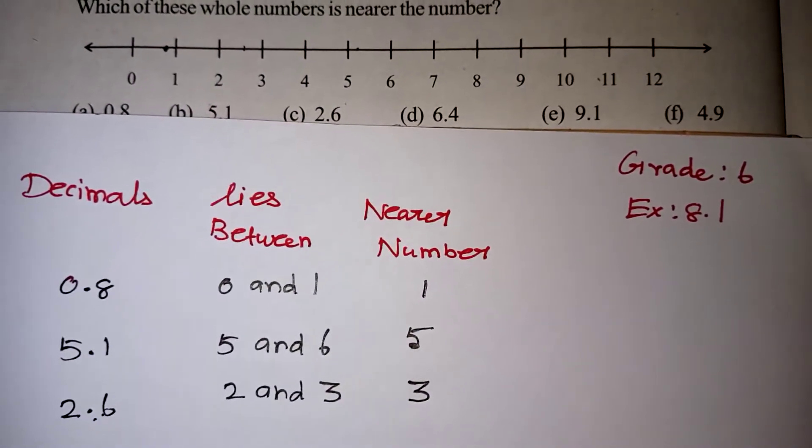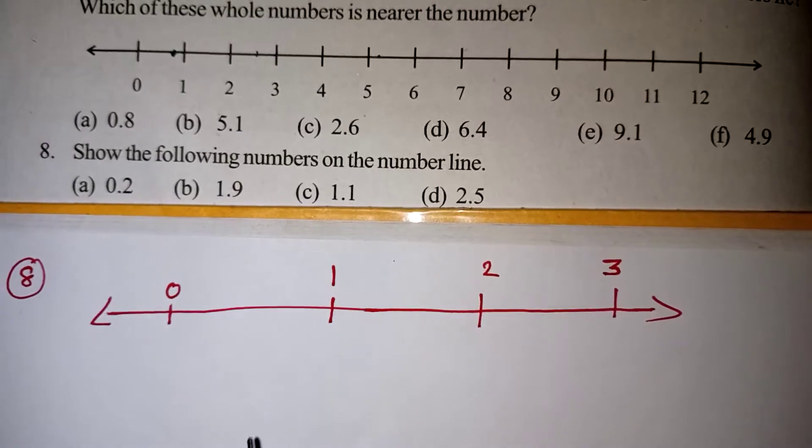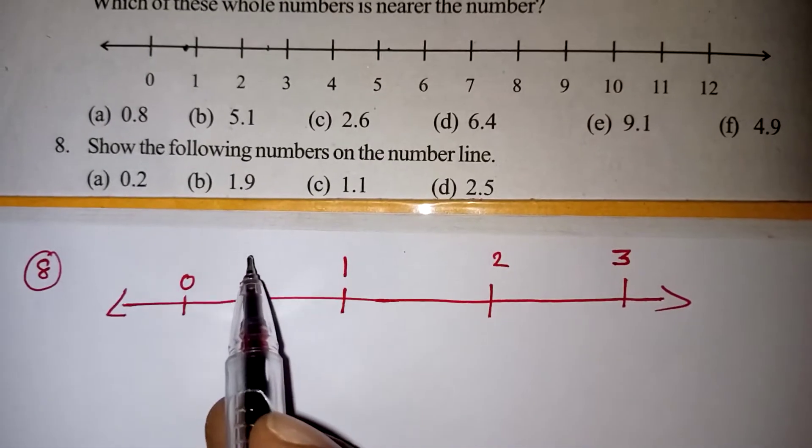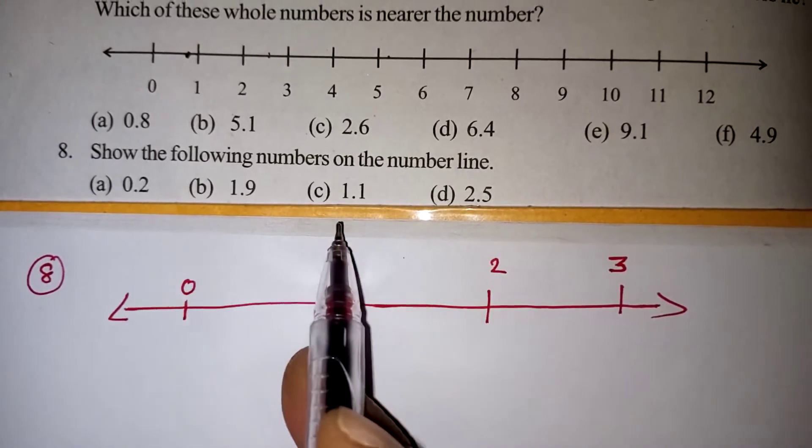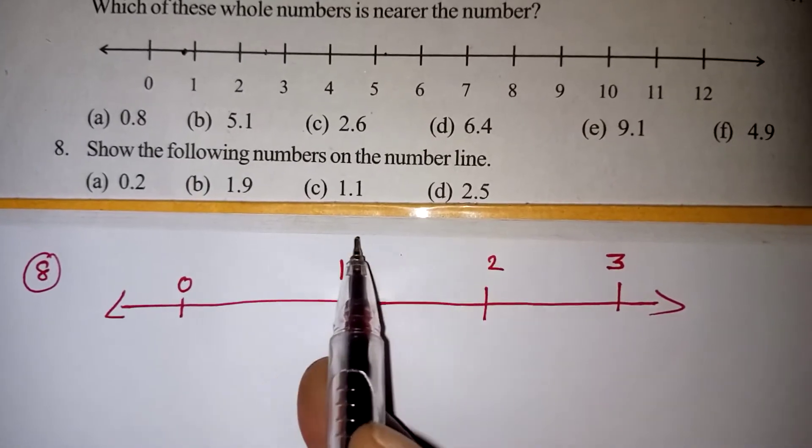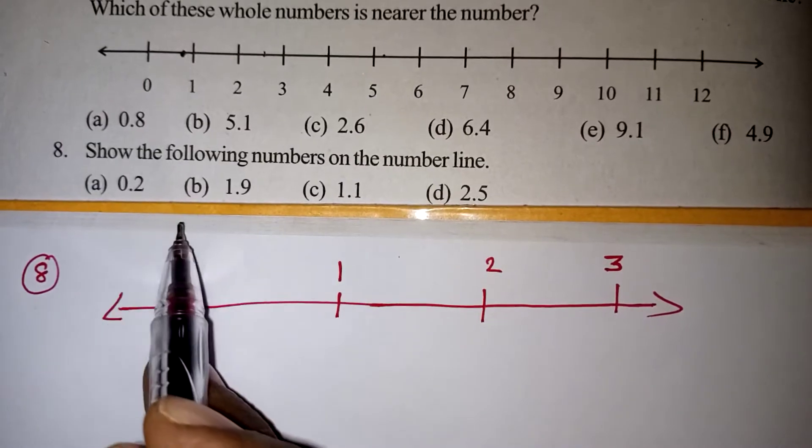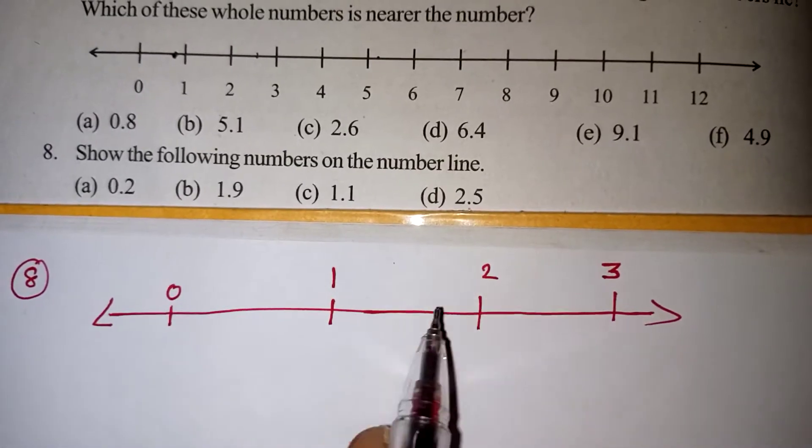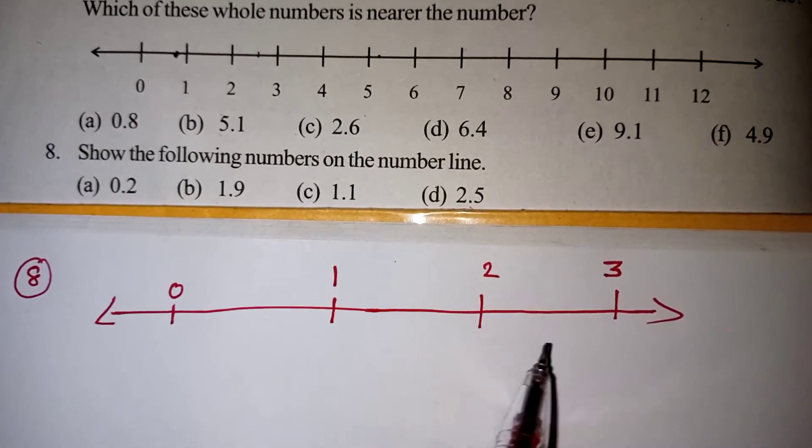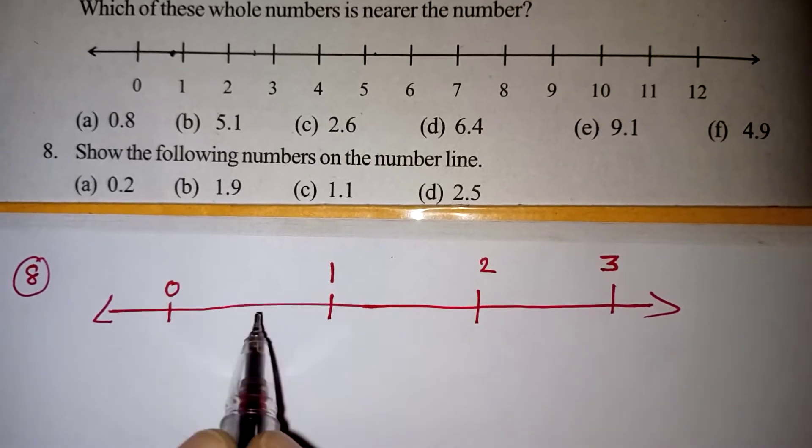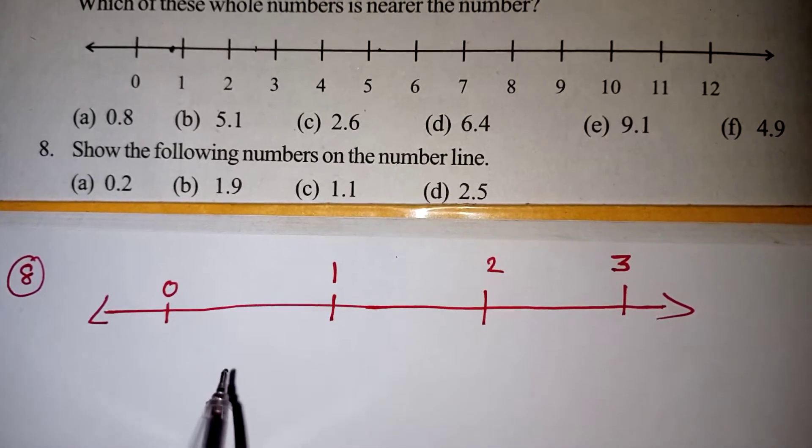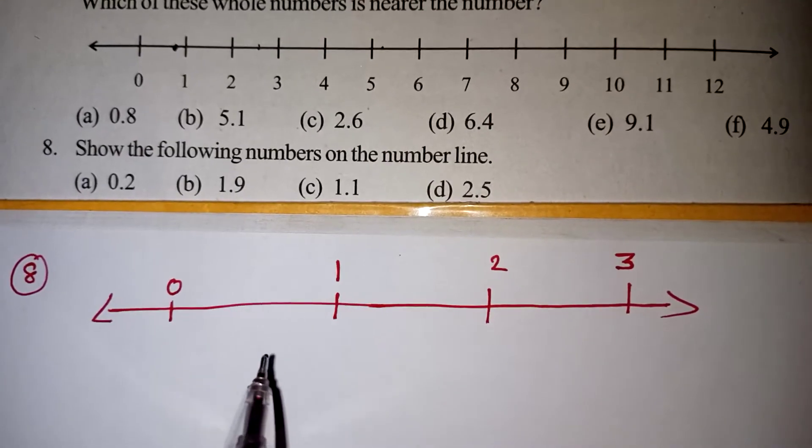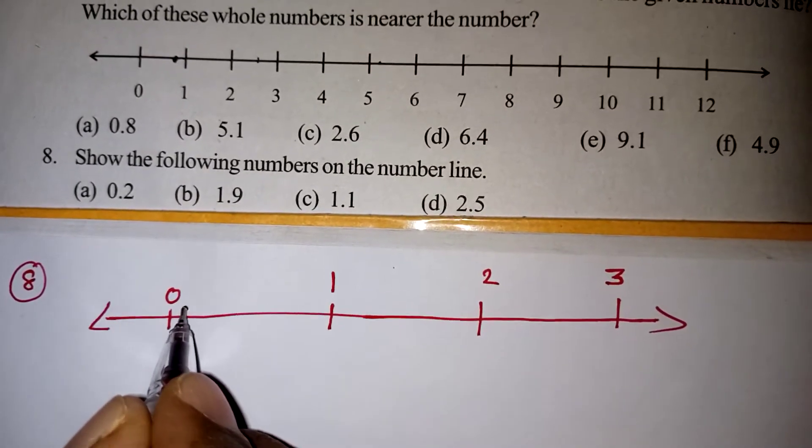Likewise, you can try the remaining sums. Now comes our 8th question: Show the following numbers on the number line. Look at the numbers 0.2, 1.9, 1.1, 2.5. All the numbers are less than 3 only, more than 0 and less than 3. That is why I have drawn the number line from 0 to 3. Between 0 to 1, we will be getting 10 small lines.